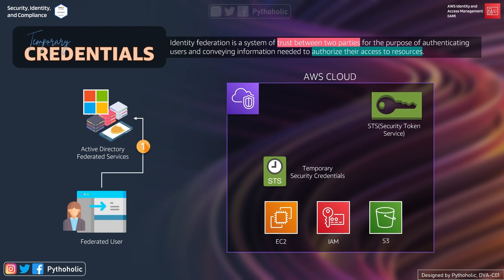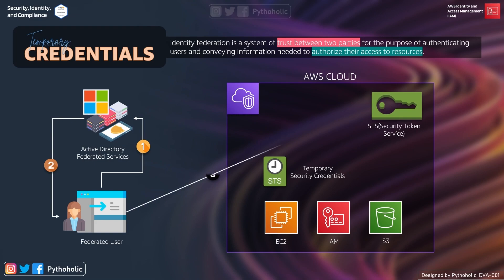As a federated user, we initiate the authentication to ADFS — that is Active Directory Federated Service — using the SSO URL. That's the first step. Second, SSO uses security assertion, validates the credentials, and sends an acknowledgement with or without a URL redirection. This SAML assertion is then sent to the AWS STS service, and we assume a role using the AssumeRoleWithSAML API.